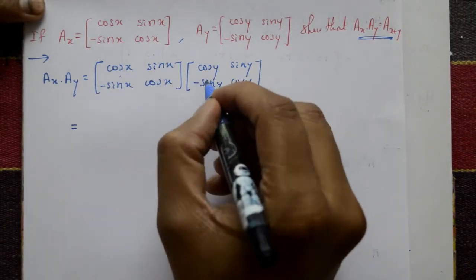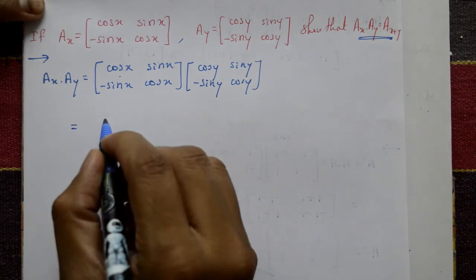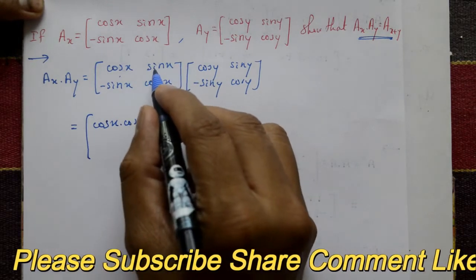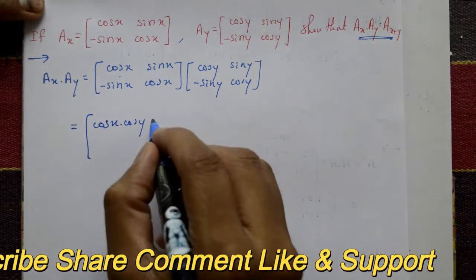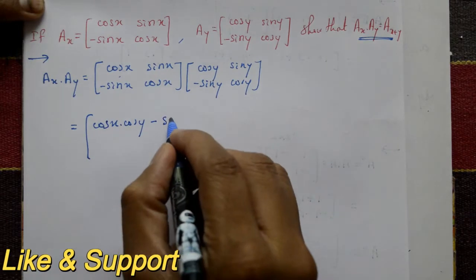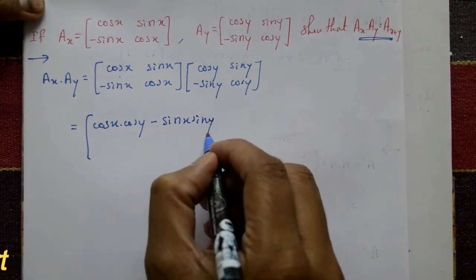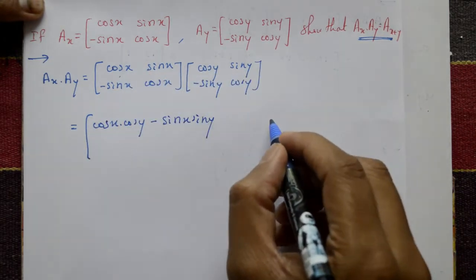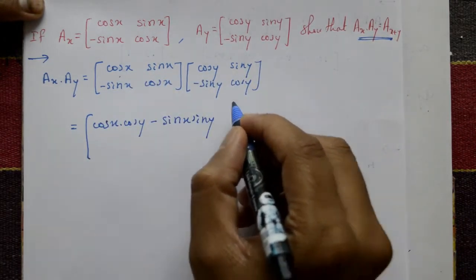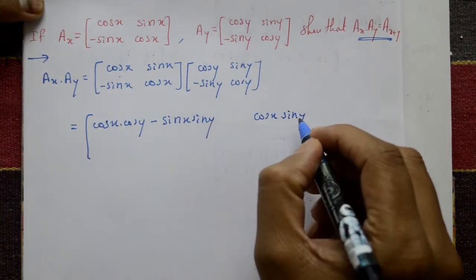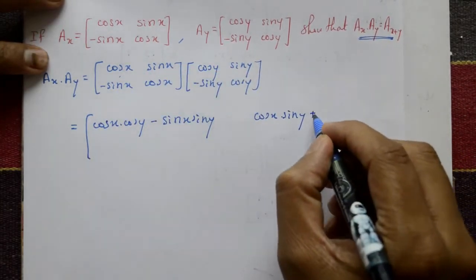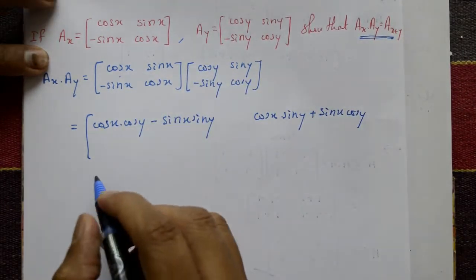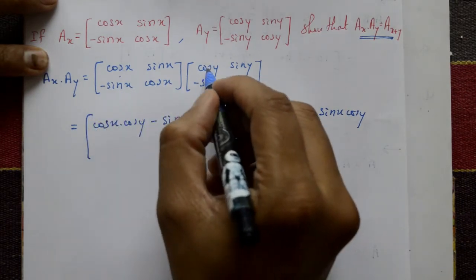First row, first column: cos x into cos y, then next element minus sin x into sin y. This gives the first element. First row, second column: cos x into sin y, then plus sin x into cos y. This is the second element of the first row.